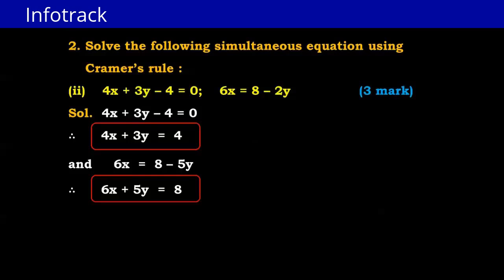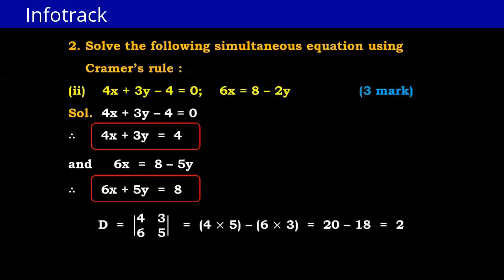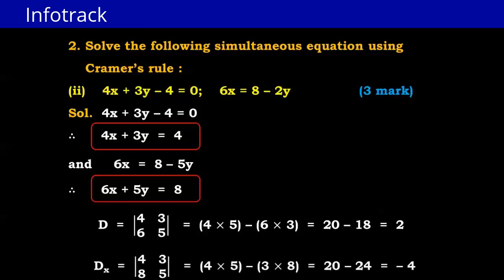Now we write determinant D with a1=4, b1=3, a2=6, b2=2. By cross multiplication: 4×2 − 6×3 = 8 − 18... Actually using a2=6, b2=5: 4×5 − 6×3 = 20 − 18 = 2. Now for Dx, we take c1=4, b1=3, c2=8, b2=5. So Dx = 4×5 − 3×8 = 20 − 24 = −4.